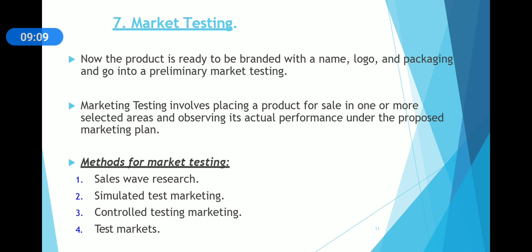Then we do market testing. Now the product is ready with its name, logo, and packaging. This is the preliminary or starting marketing testing stage. Market testing involves placing a product for sale in one or more selected areas and observing its actual performance to see the response of customers. Methods used include sales, web research, simulated test marketing, controlled test marketing, and test markets.